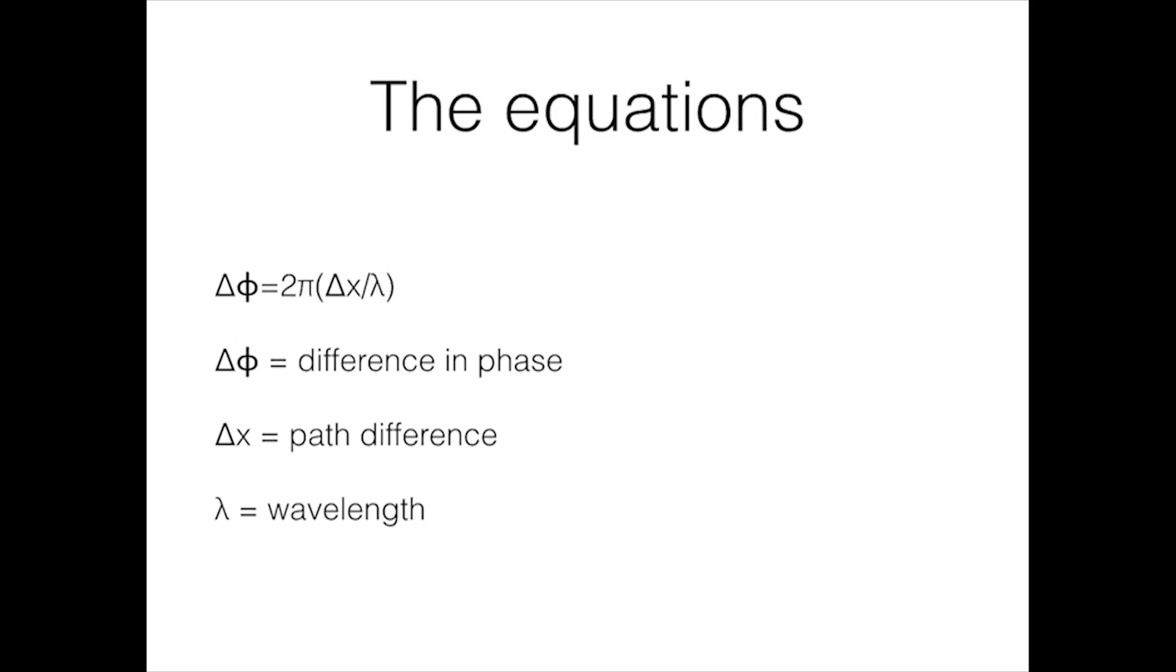To determine if a wave cancels or adds at a given point, we need to determine the phase difference of the two waves at the point. Using the equation delta phi equals 2 pi times delta x divided by lambda.